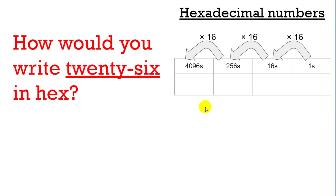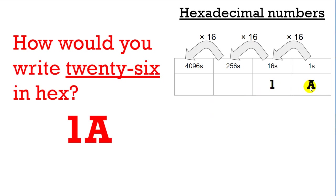How would you write twenty-six? Well, to get to twenty-six you need one sixteen and ten ones. Remember, A is ten. One sixteen and ten ones — sixteen plus ten is twenty-six. So in hexadecimal you write it as one-A.